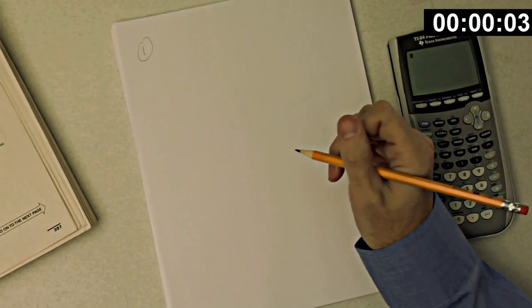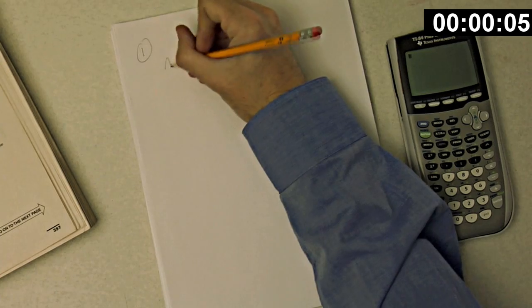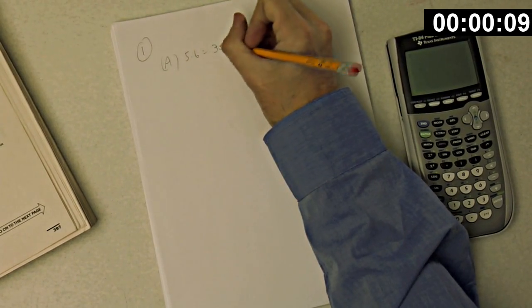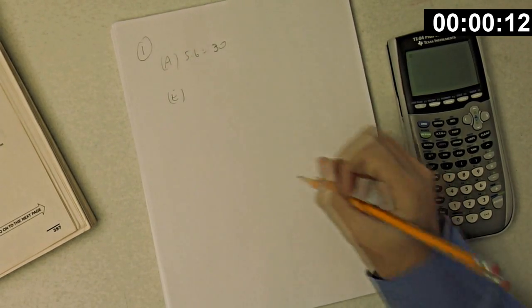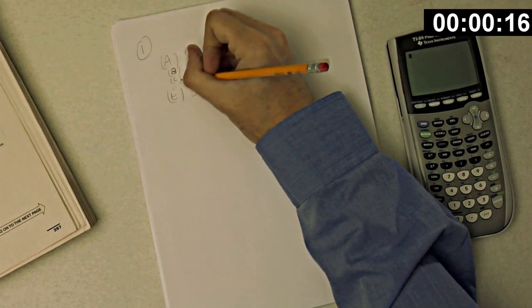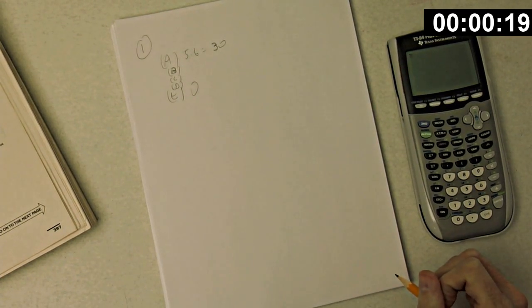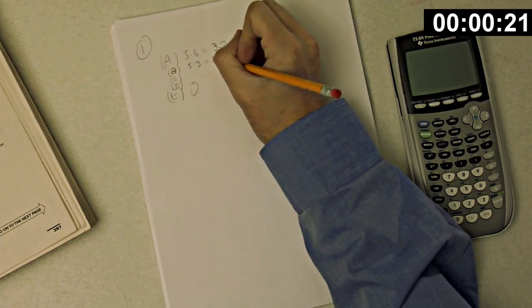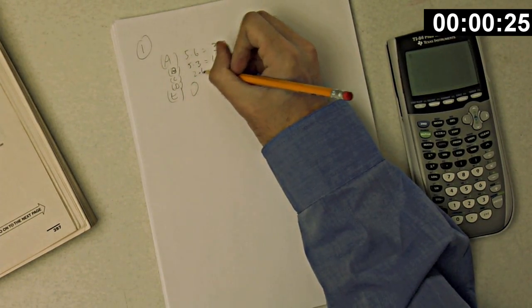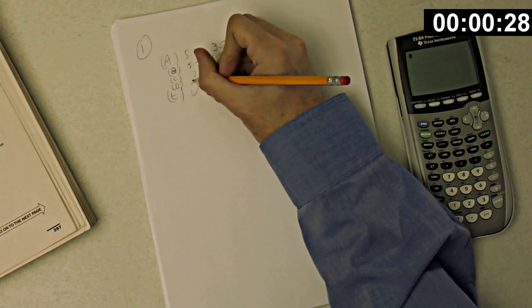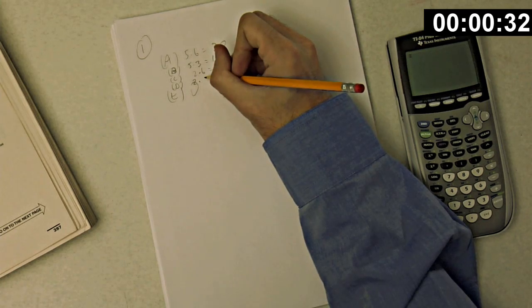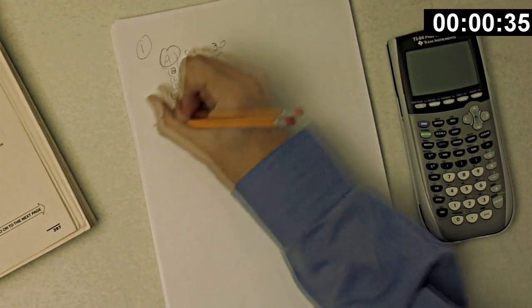Okay, number one. If x equals four, which of the following is greatest in value. Okay, let's try A, that would be 5 times 6, which is 30, and let's try E, which is 0. Alright, so it looks like the answer is A, but let's try the others as well. B is 5 times 3, which is 15, C is 2 times 6, which is 12, and D is 2 times 5, which is 10. Okay, so the answer is A.